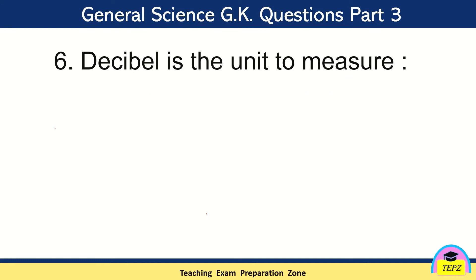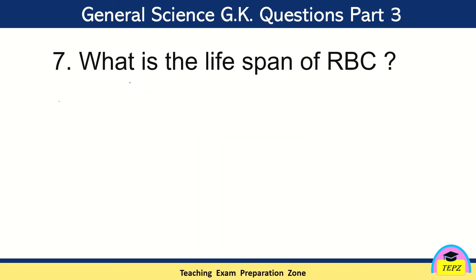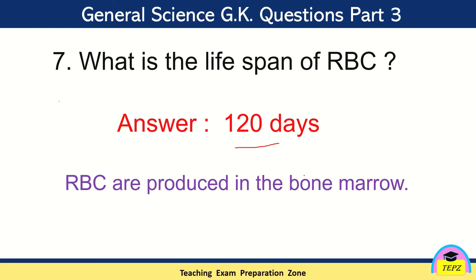Decibel is the unit used to measure the intensity of sound — yes, sound is measured in terms of decibels. Let's see question number 7: What is the lifespan of RBC? RBC means red blood cells. The lifespan of RBC is 120 days, and RBC is produced in the bone marrow.